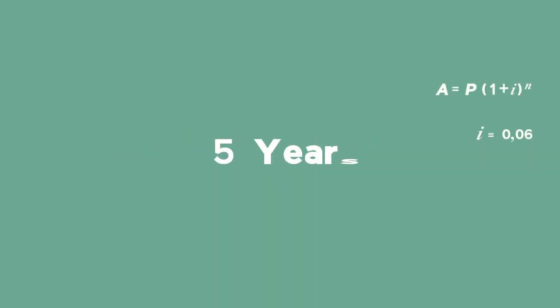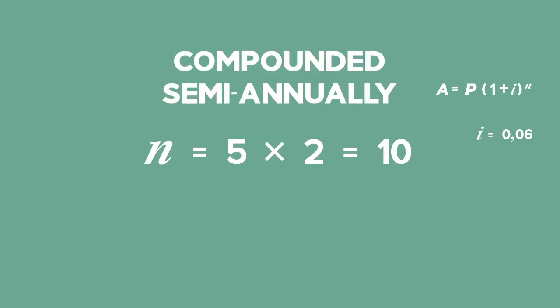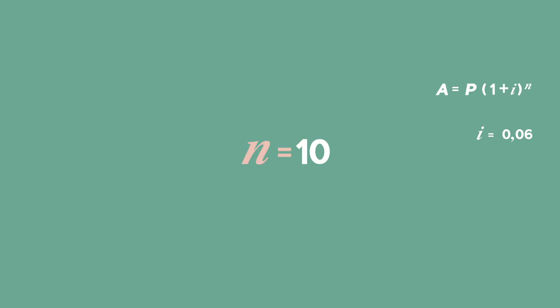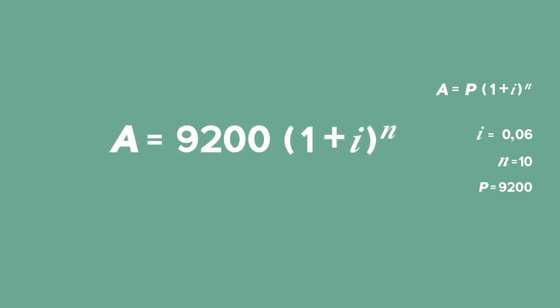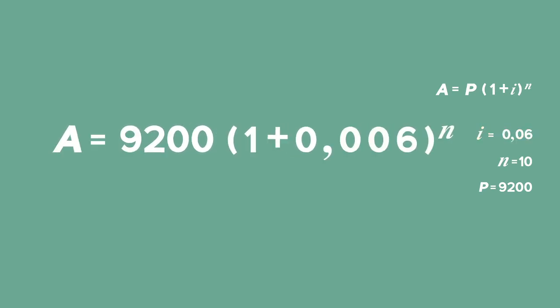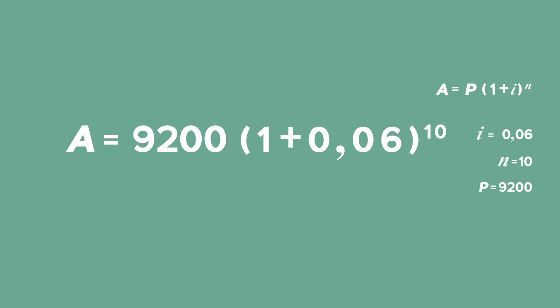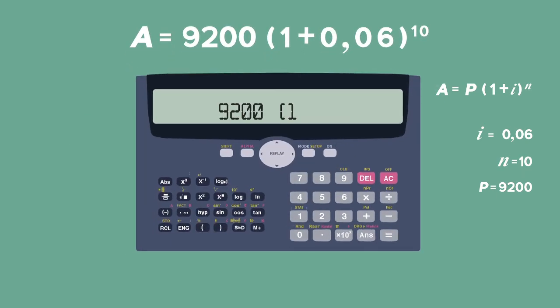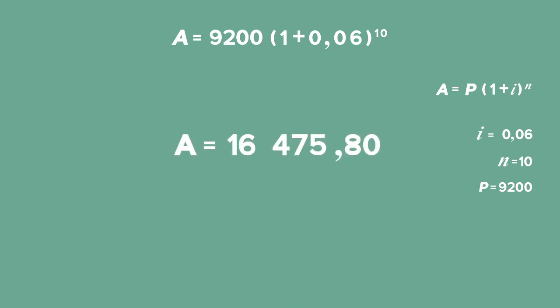Next, multiply the number of years by 2 since compounding is semi-annual, and you will substitute n equals 10. The initial amount invested is R9,200, so replace P with R9,200 in your formula, i with 0.06 and n with 10. Use your calculator to work out the accumulated value Sibor gets, 16,475 rand and 80 cents.